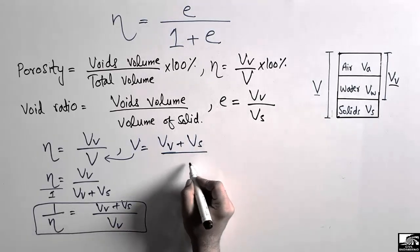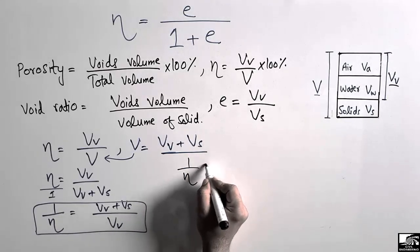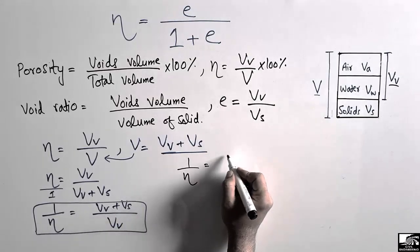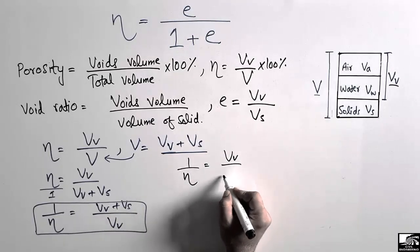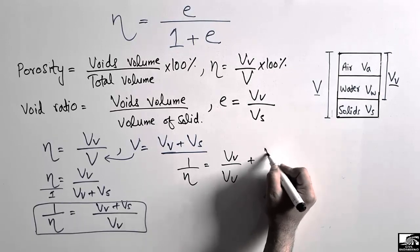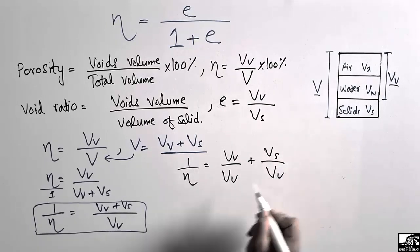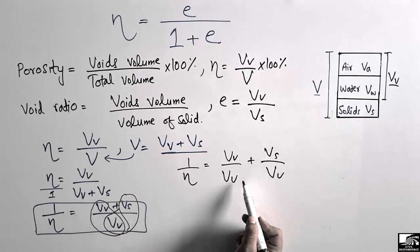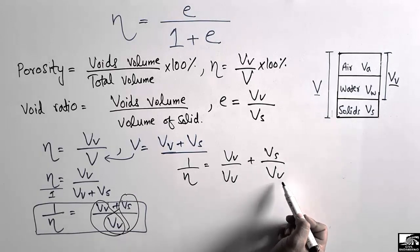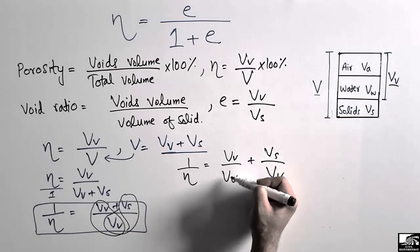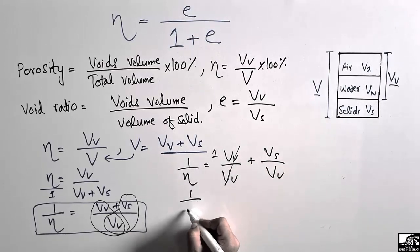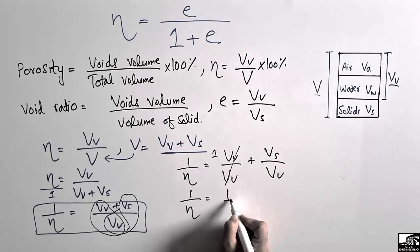Now solving this equation: 1 over n equals, if we separate the terms, VV divided by VV plus VS divided by VV. We split this into two parts: VV over VV, which cancels to 1, plus VS over VV. So 1 over n equals 1 plus VS divided by VV.